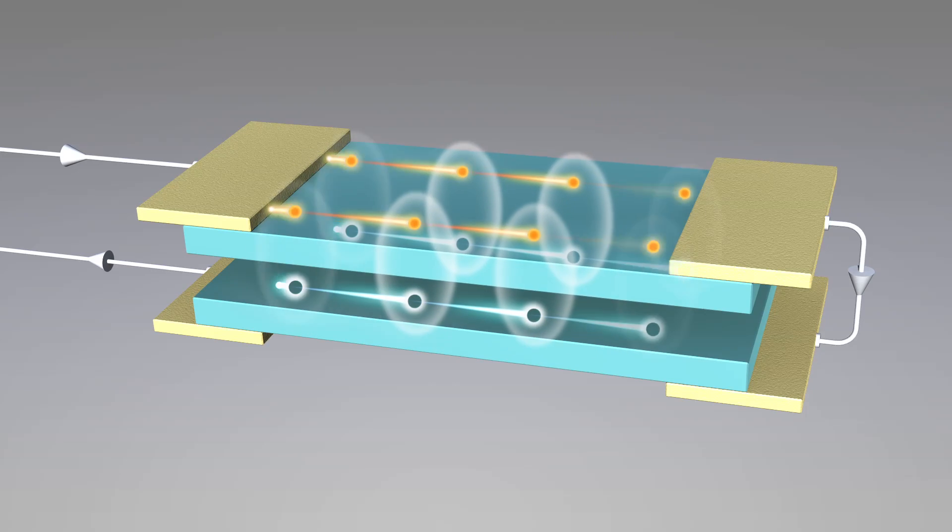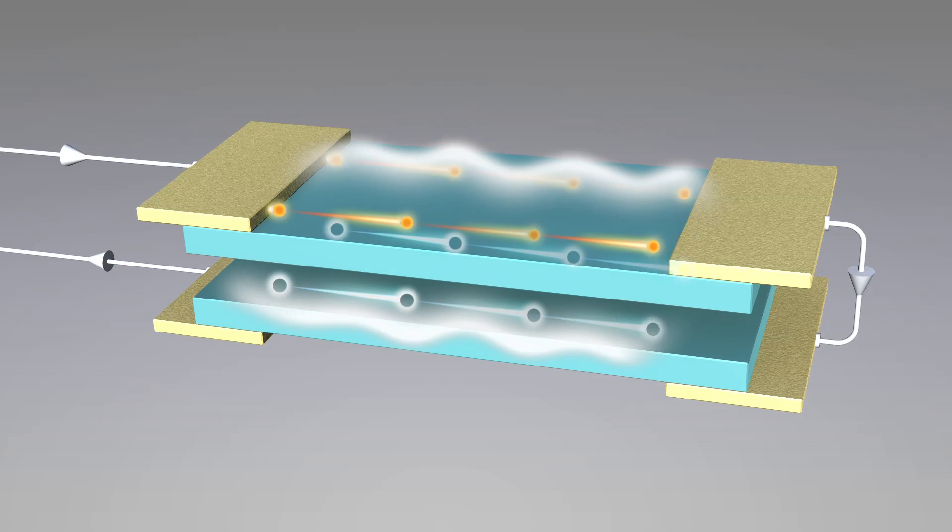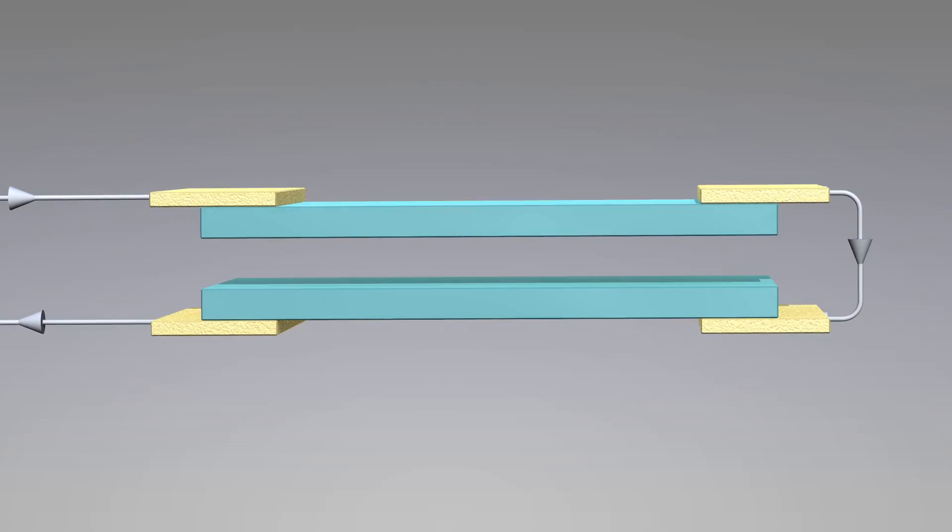Collections of excitons condense into a superfluid, which can flow without resistance. This superfluid can carry electrical currents in opposite directions in top and bottom layer.